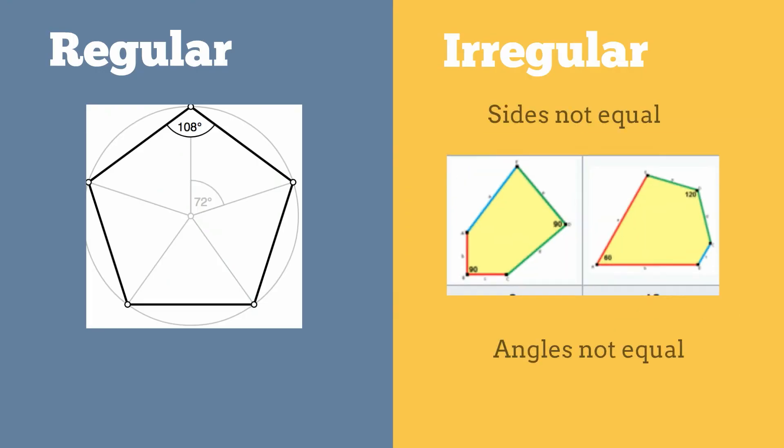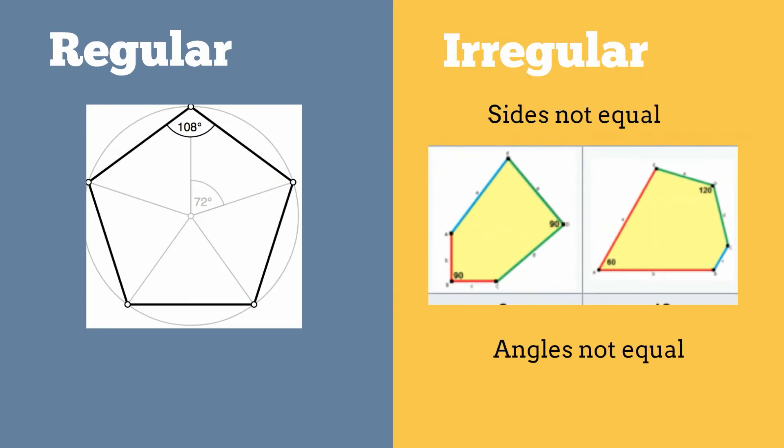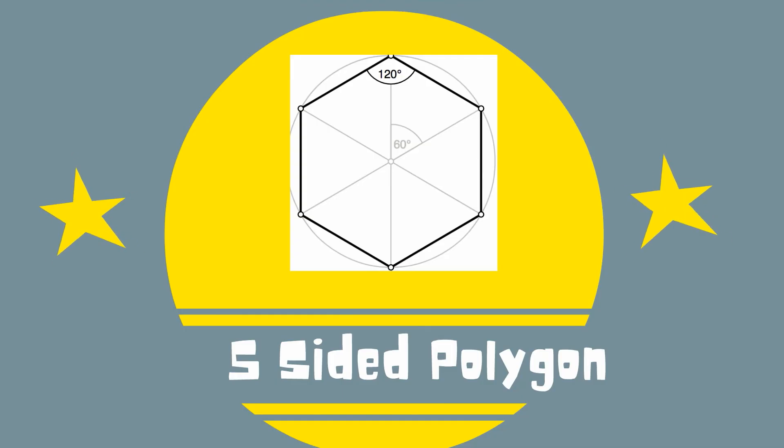Pentagons can also be irregular which means the shape does not have equal sides or angles. So there you go, the 5-sided polygon.